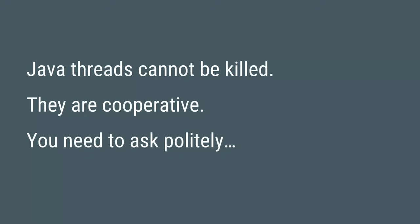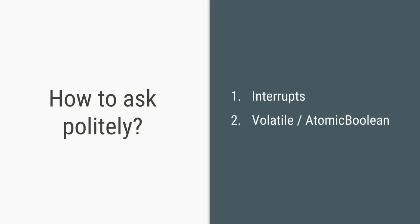This brings us to the first key lesson: Java threads cannot be killed. They are cooperative in nature. For a thread to stop, someone needs to ask it politely, and the two ways to do that are either using interrupts or using volatile variables.